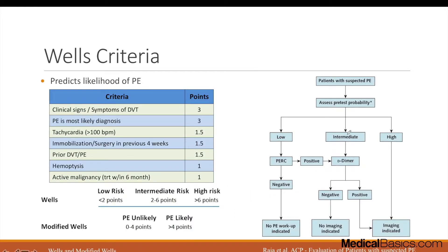I've been talking about low, intermediate, and high risk — but how do we define those? The criteria you'd commonly hear, especially on internal medicine, is the Wells Criteria. It's very similar to PERC in the actual criteria — mainly symptoms or risk factors for PE — but the point system is different. Clinical signs or symptoms of DVT, PE being the most likely diagnosis, tachycardia, surgery or immobilization, history of DVT or PE, hemoptysis, or active malignancy all contribute points. All of this is on MDCalc, so you don't need to memorize the scores — just understand these are risk factors and symptoms of PE.